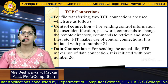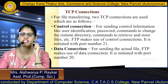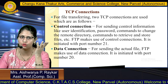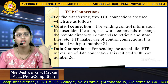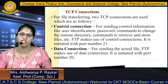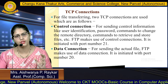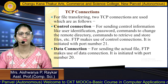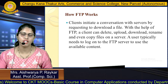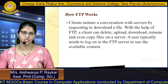For file transfer, TCP connections are used. There are two types: control connection and data connection. The control connection is used for sending control information such as user identification, password, commands to change the remote directory, and commands to retrieve and store files — it uses port number 21. The data connection is used for sending the actual file and uses port number 20.